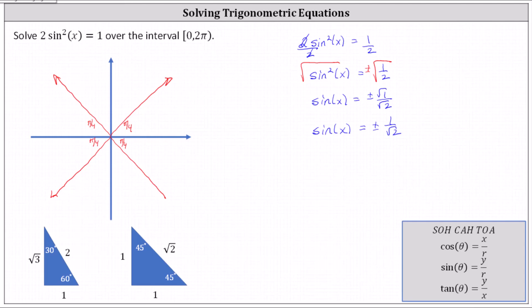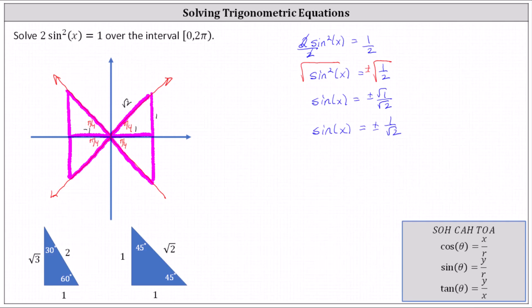Let's sketch the reference triangles. In the first quadrant where both x and y are positive, we label both legs positive one and the hypotenuse square root two. In the second quadrant where x is negative and y is positive, the horizontal leg is negative one, the vertical leg positive one, and the hypotenuse square root two. In the third quadrant, both legs are negative one and the hypotenuse is square root two. In the fourth quadrant where x is positive and y is negative, the vertical leg is negative one and the hypotenuse is square root two. Notice in the first and second quadrants the sine function values are one divided by square root two, and in the third and fourth quadrants they are negative one divided by square root two.